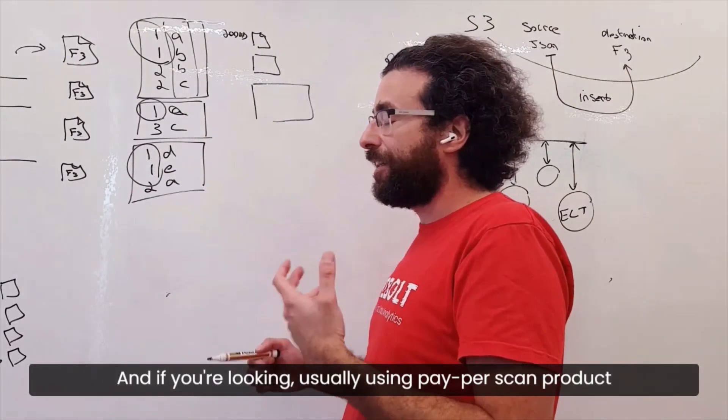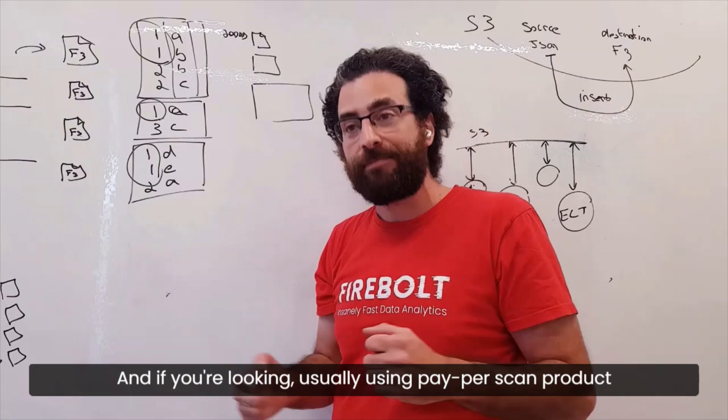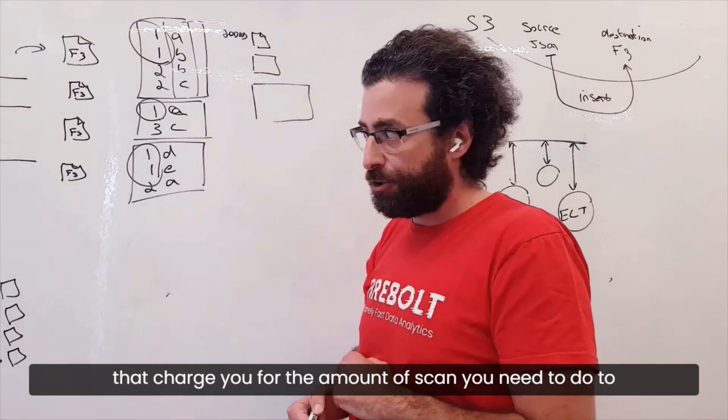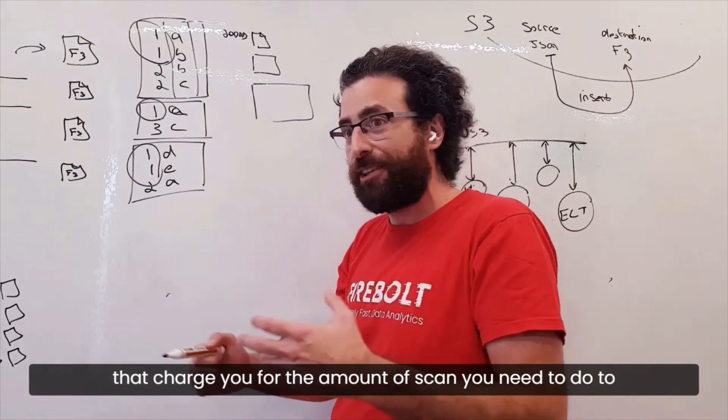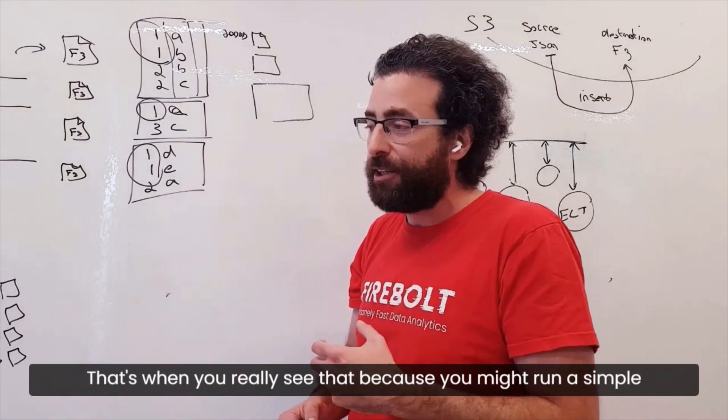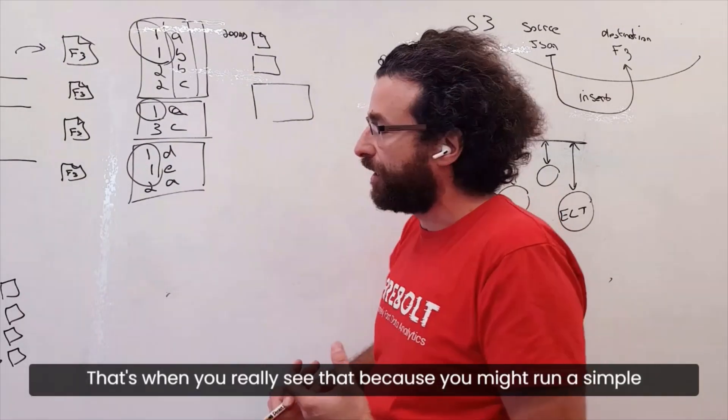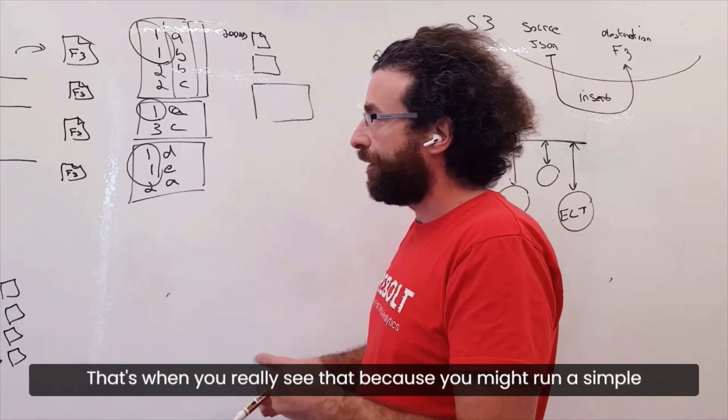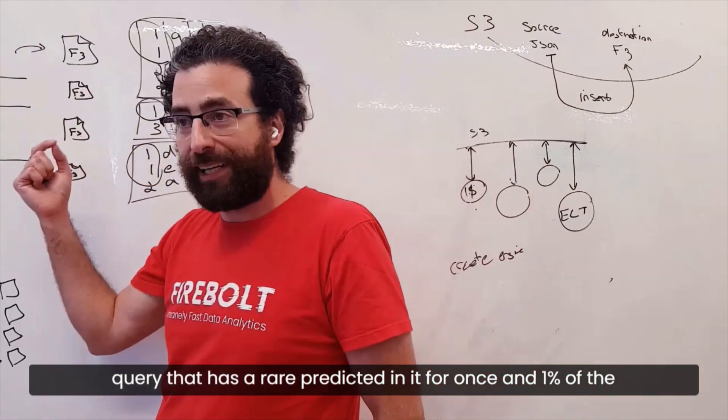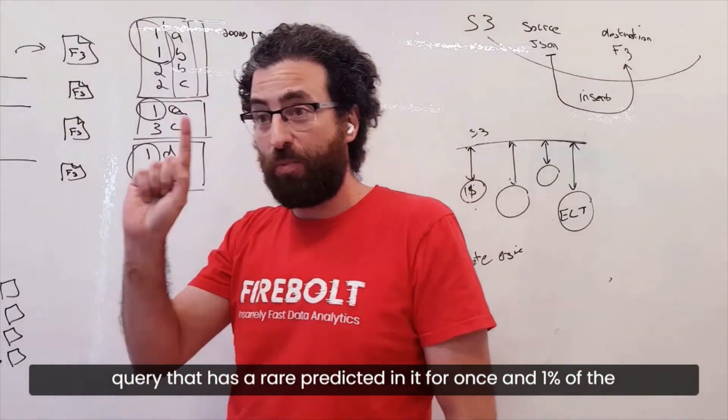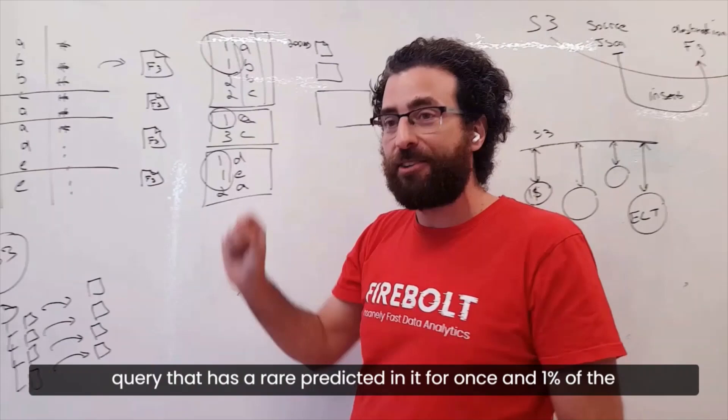If you're usually using pay-per-scan products that charge you for the amount of scan you need to do to answer a query, that's when you really see that. Because you might run a simple query that has a where predicate in it for ones, and ones are 1% of the data.